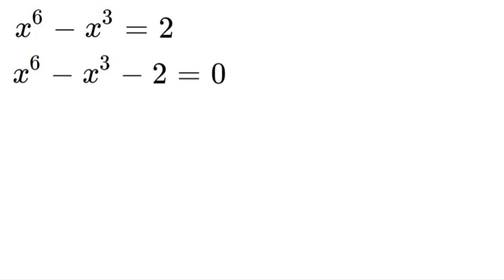Now what we're going to do is take this x to the power of 6 and turn it into x to the power of 3 and then that will be squared, because when we have an exponent to an exponent, you just multiply them. And 3 times 2 is 6.